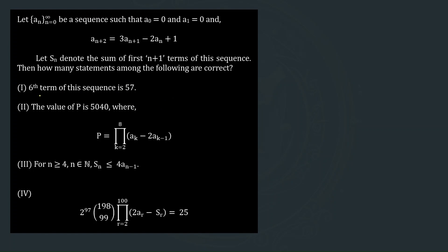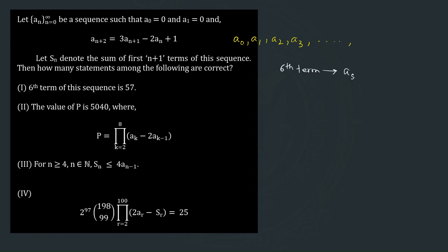The first statement says the sixth term of this sequence is 57. If we try to decode the sequence — a₀, a₁, a₂, a₃, and so on — the sixth term will be a₅. Be careful: some might mistakenly consider a₆ as the sixth term, but that is incorrect. So we have to calculate a₅.